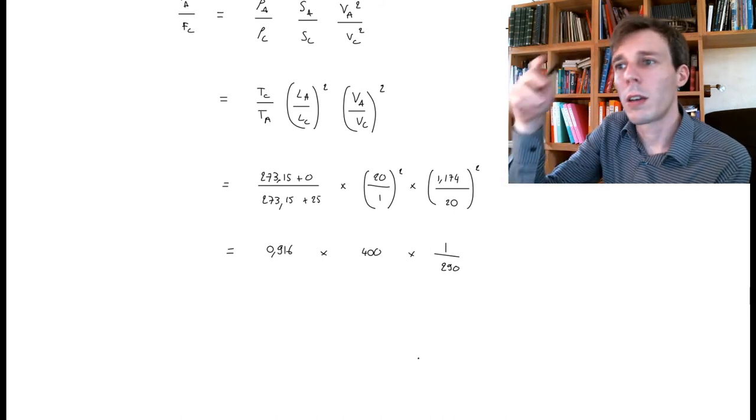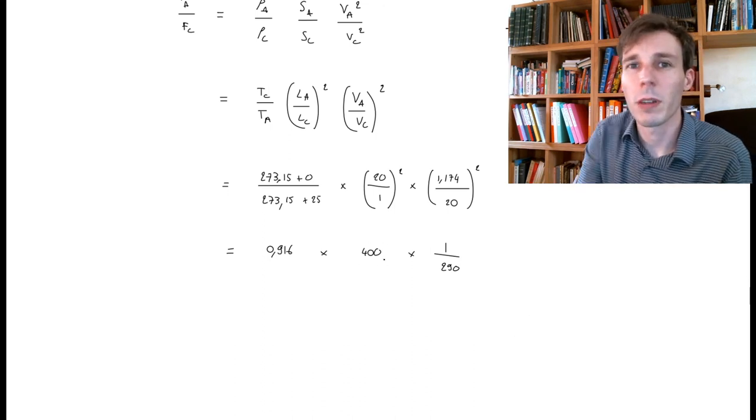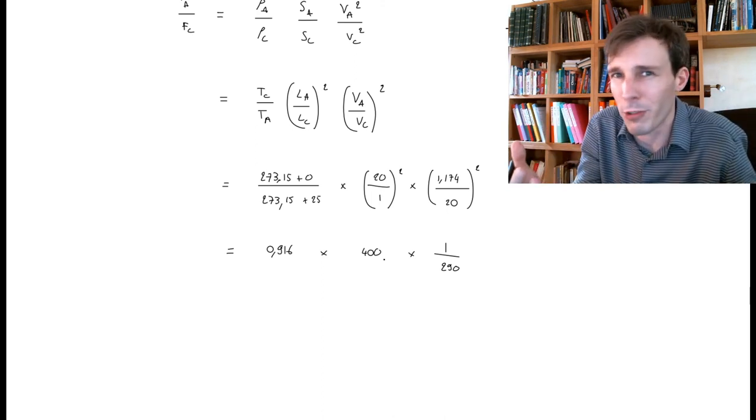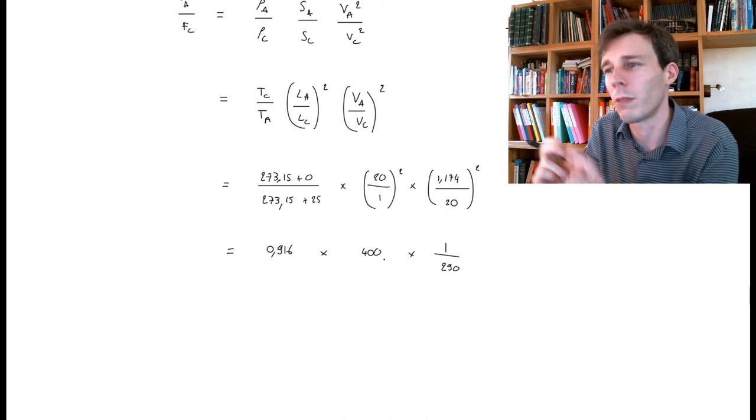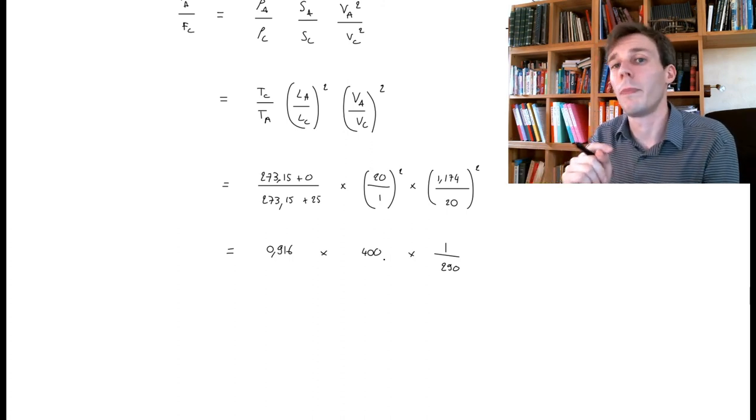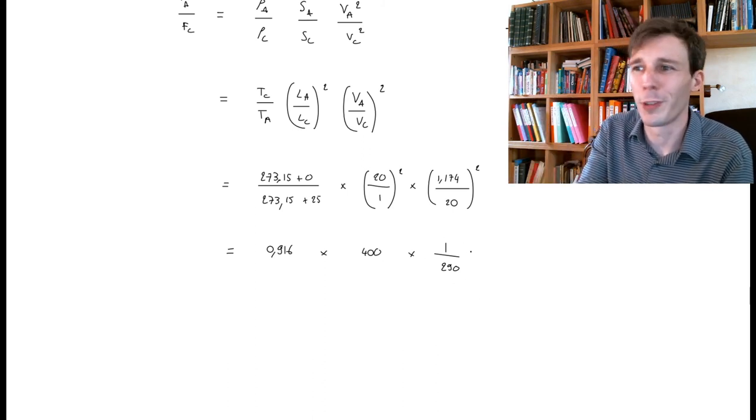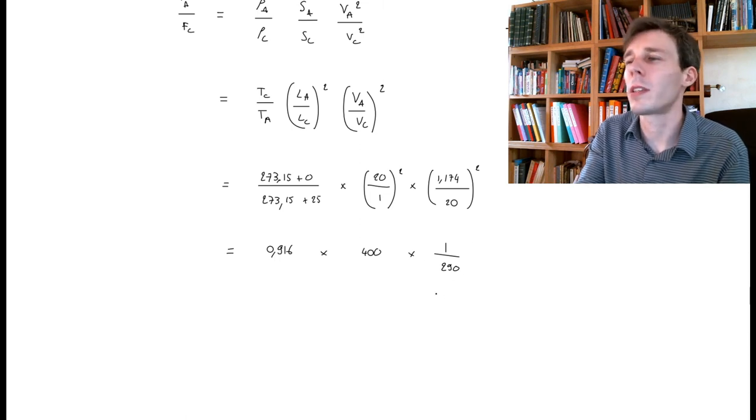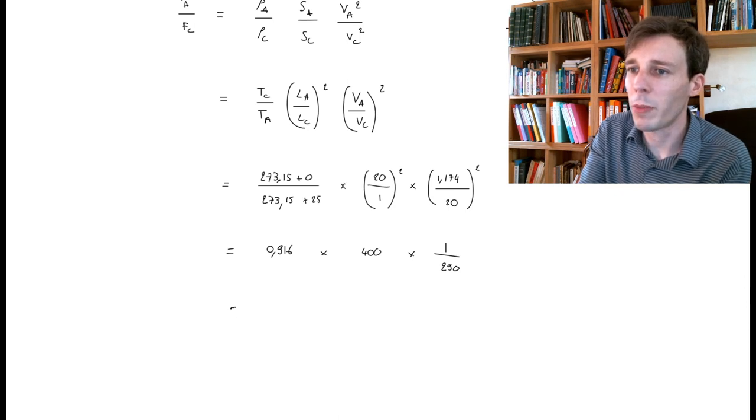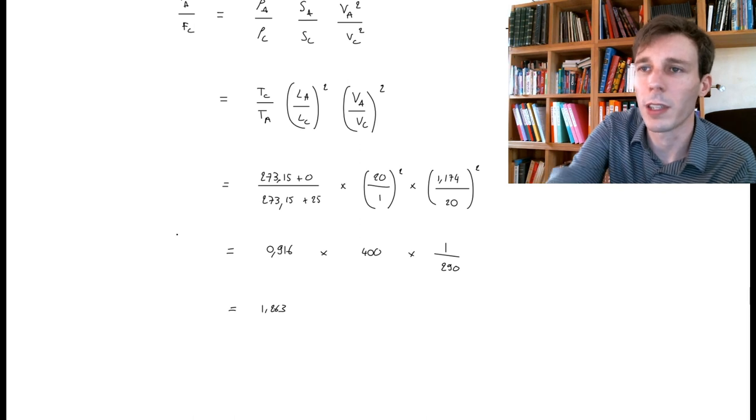So you can see that, on the one hand, you want to multiply the force by a very large factor because the car is very much larger. In fact, the frontal area of the real-size car is 400 times larger than the area on the small-scale model. But because we run the car much slower, and the square of the speed also is taken into account, we have a factor of about 300 taken into account here. The car is much slower, so we divide by 290 here. And if you multiply all of those, you get 1.263. And this says, we calculated it above here, this is FA over FC.